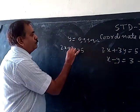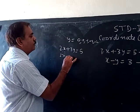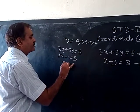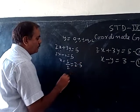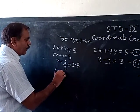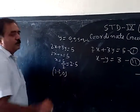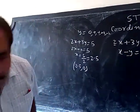So when we put first value 0, 2x plus 0 is equal to 5, means x is equal to 5 by 2, that is 2.5. So one coordinate x value is 2.5 when y is 0. So one coordinate is (2.5, 0).